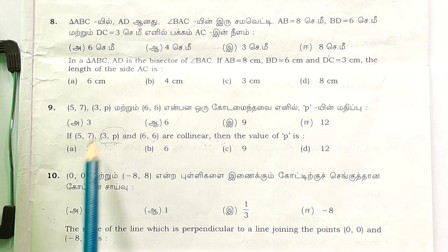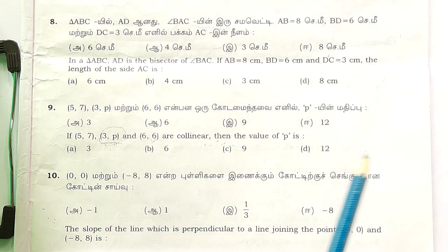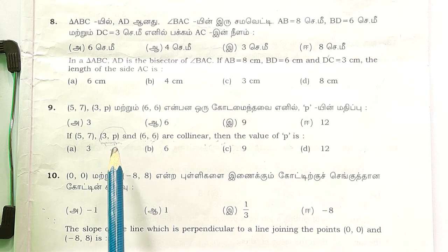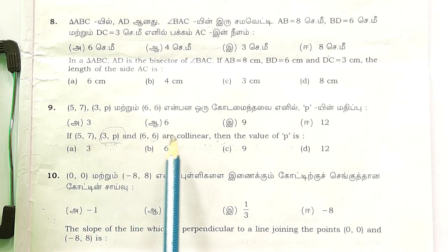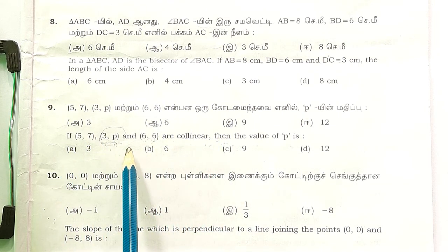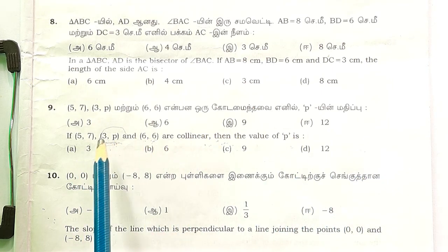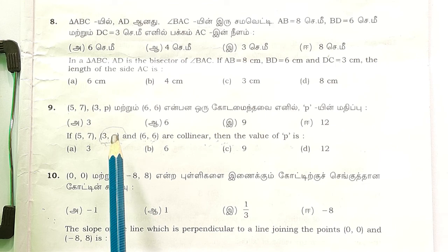Three coordinates are given here. If the points are collinear, then the slopes are equal. We find two slopes: y2